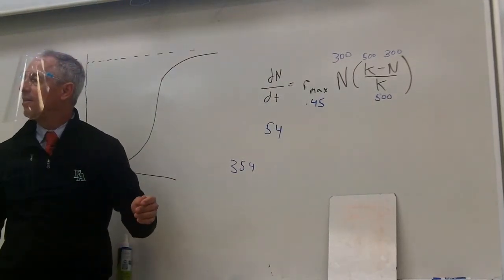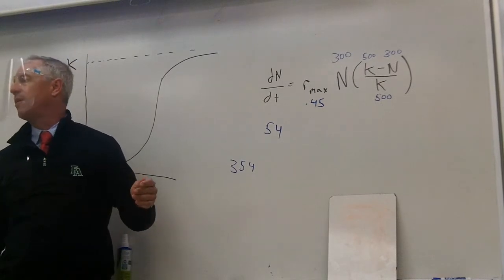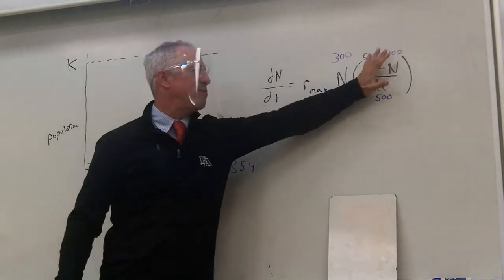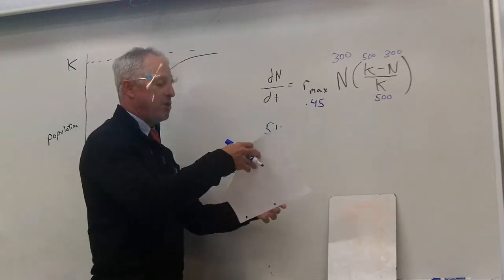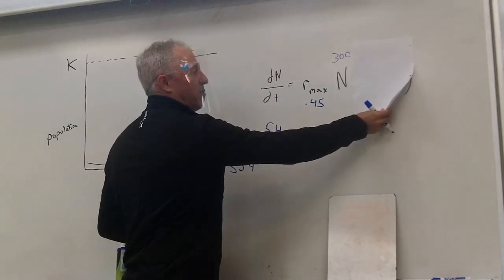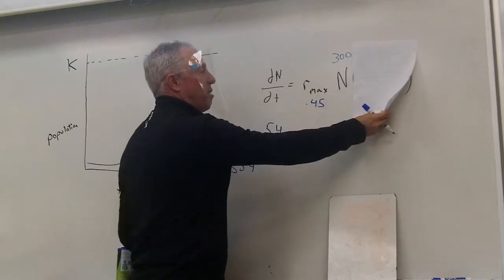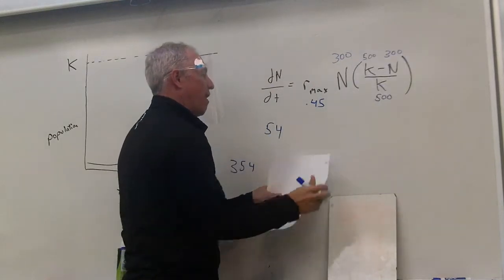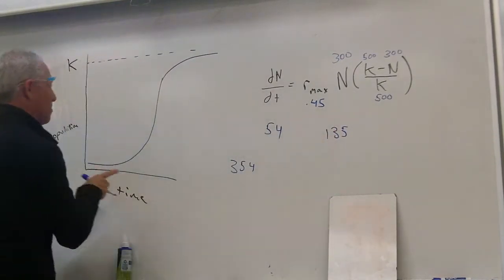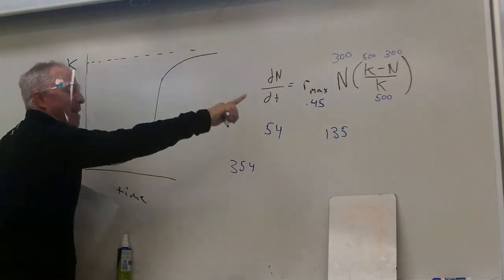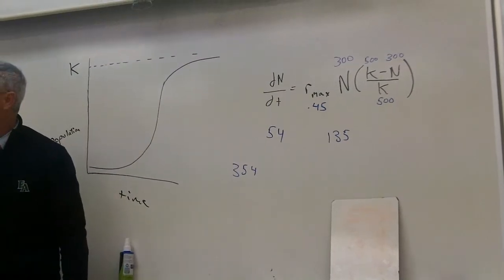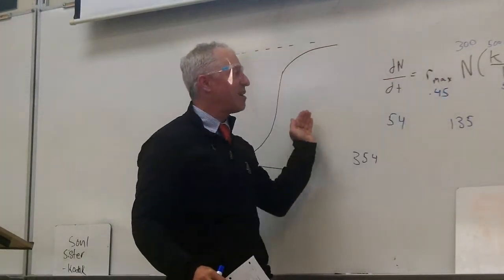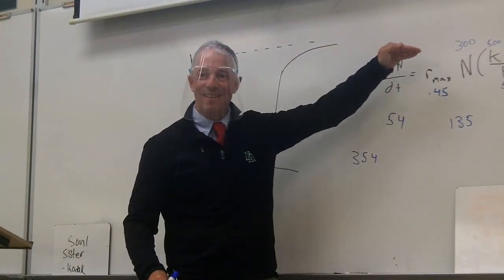So let's think about this for a minute. What would it be? Y'all listen. Everybody up here. What would it be if there was no carrying capacity, if it was just exponential growth? You would just remove this fraction and it would be, what's 0.45 times 300? 135. We would have gone up 135 if it was just exponential growth. But since it's leveling out at the carrying capacity, we only went up 54. Y'all see what I'm saying? The carrying capacity causes you not to go up as fast. It limits the growth.